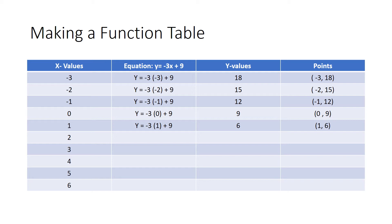In the sixth row I write my equation with the x value of two: negative three times two plus nine, and I get an answer of three. I take the x value two and the y value three and write it in the points column as two, three.